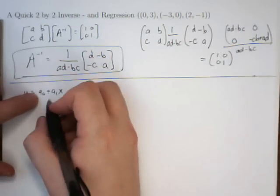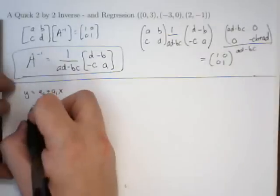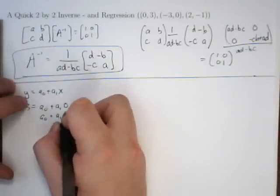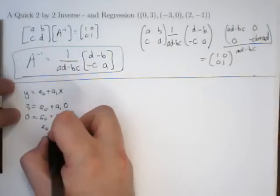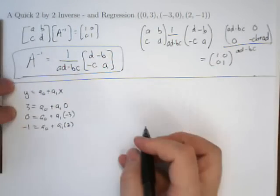So, we plug them in, we put in 0 and we get A0 plus A1 times 0 and out pops 3. We put in negative 3, A0 plus A1 times negative 3 and out pops 0. We put in 2, A0 plus A1 times 2 and out pops negative 1.